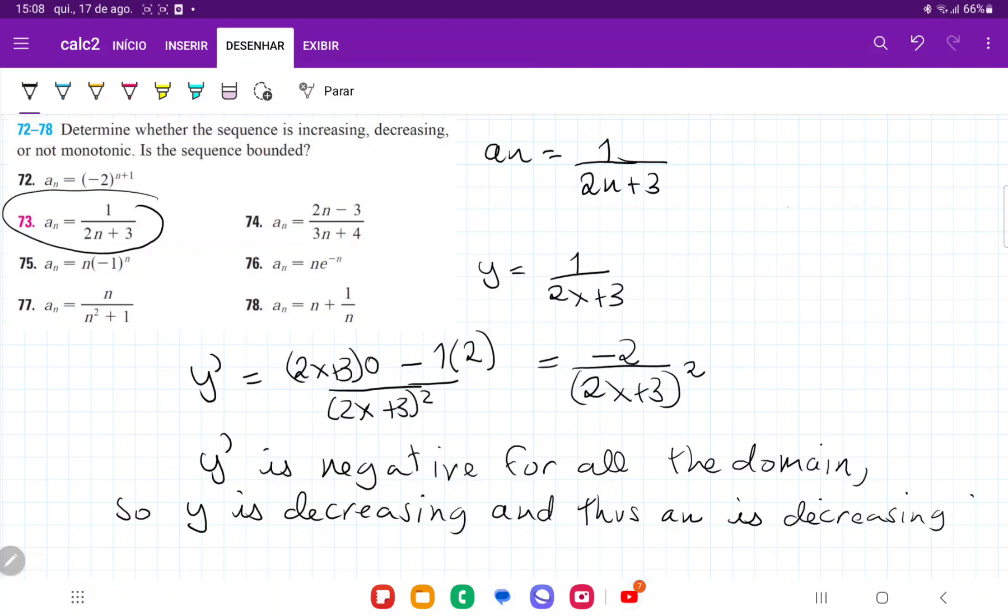And so once we've established this, it's asking us, is this sequence bounded? Well, if it's always decreasing, it means that the first term is always the bigger one, because the second term is going to be smaller than the first term, and so on and so forth. So what's the first term?